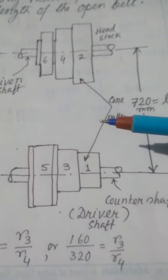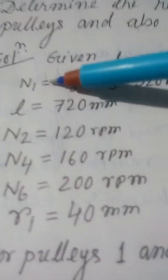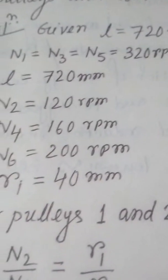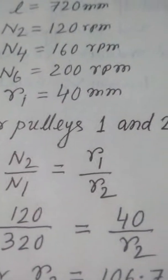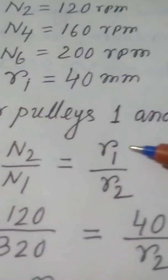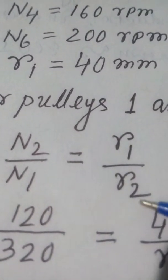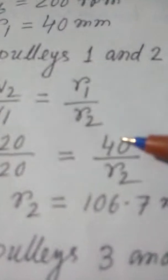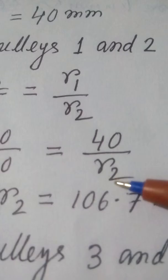These are the two cone pulleys with the given data. Using the speed ratio equation N2/N1 = R1/R2: N1 = 320 RPM, N2 = 120 RPM, and R1 = 40mm are given. Solving for R2, we get R2 = 106.7mm.